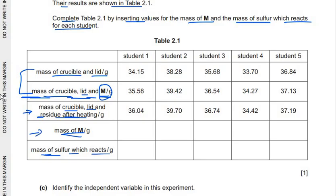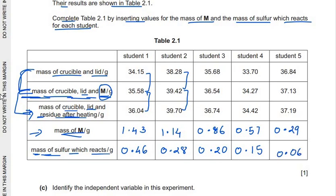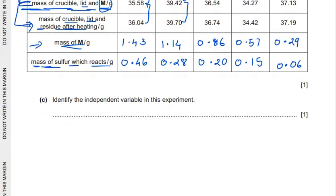Subtracting the appropriate rows for each student gives: mass of M and mass of sulfur which reacts respectively: 1.43 and 0.46; 1.14 and 0.28; 0.80 and 0.86 — wait, 0.86 and 0.20; 0.57 and 0.15; 0.29 and 0.06. The table is now completed with all subtracted values for each student.